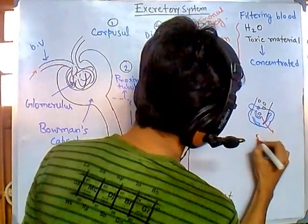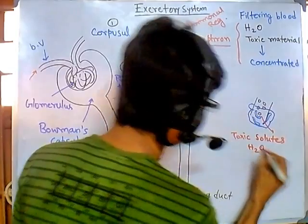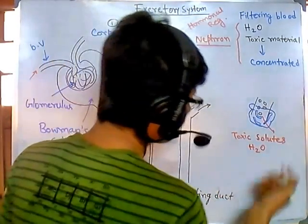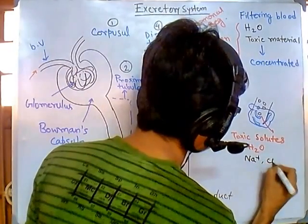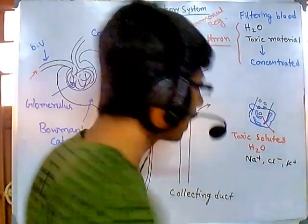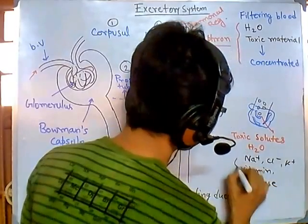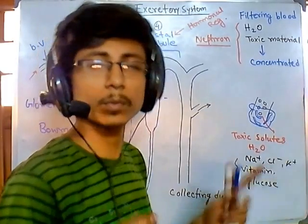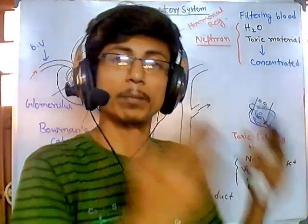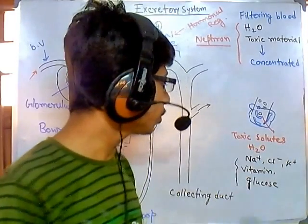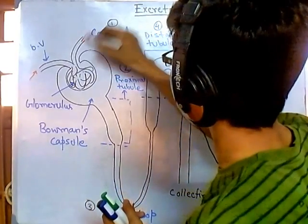What is coming out: toxic solutes we don't require, water, and also undesired ions like sodium, chlorine, and potassium. Vitamins sometimes come out, and glucose sometimes comes out too. These are things we don't want ending up in urine. So this process is not very selective — through the pores, both toxic and non-toxic, required and unrequired materials come out.